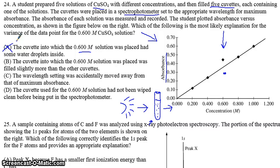B says the cuvette into which the 0.6 molar solution was placed was filled slightly more than the other cuvettes. It turns out it doesn't really matter if you fill it a little more with water. There's a certain point into which the light shines, so as long as it's above a certain point, it doesn't matter if you fill this up with more solution. So that is not one of the points either.